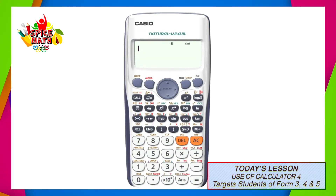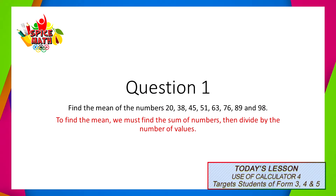In today's lesson, we'll be looking at four questions. The first question: find the mean of the numbers 20, 38, 45, 51, 63, 76, 89, and 98. In order to find the mean of this set of numbers, we must first find the sum of these numbers, then divide this sum by the number of values in the set of numbers.